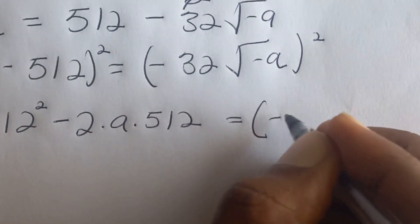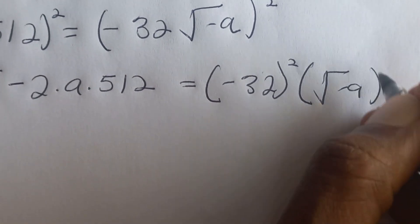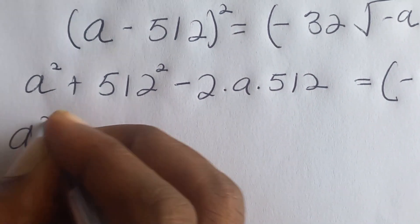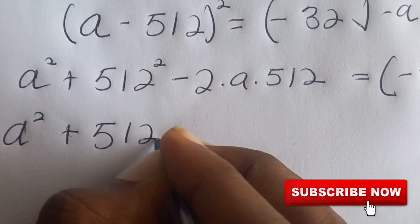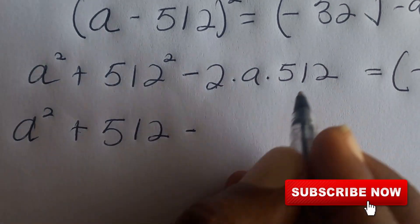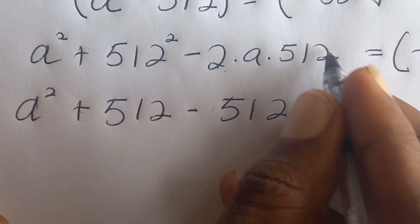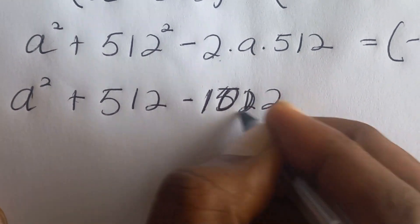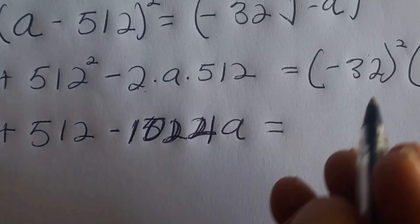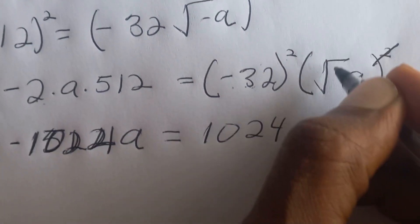So squaring both sides: a squared plus 512 squared minus 2 times 512 times a is equal to negative 32 squared multiplied by negative a. Now 32 squared is 1024, and the square cancels the square root of negative a, giving negative a. So the right side becomes 1024a. Bringing terms together: a squared plus 512 squared minus 1024a equals 1024a.